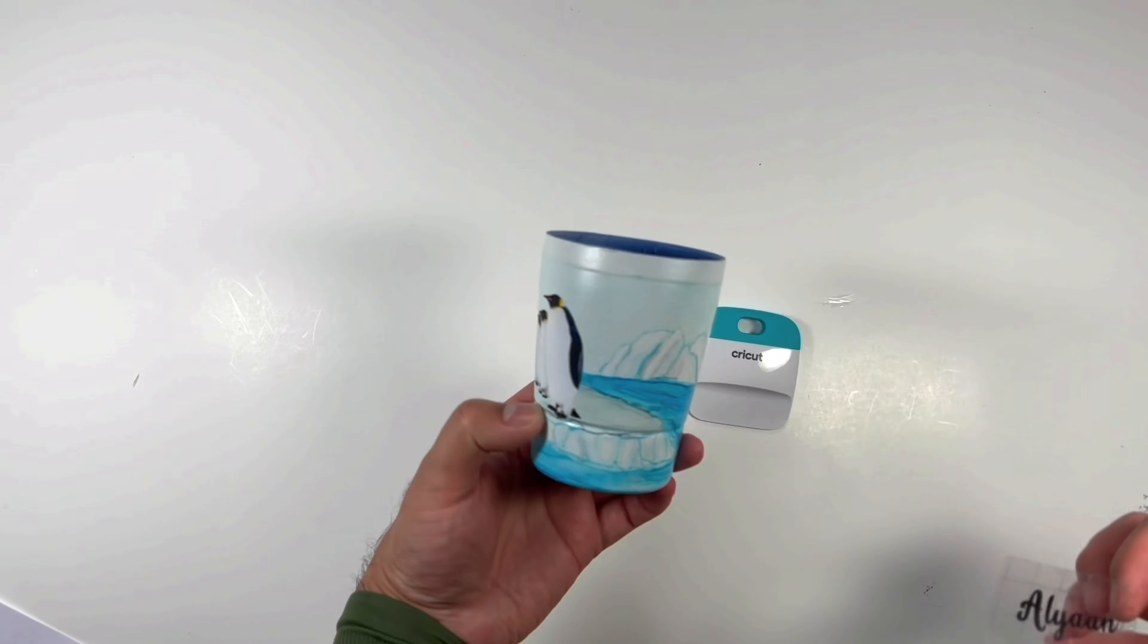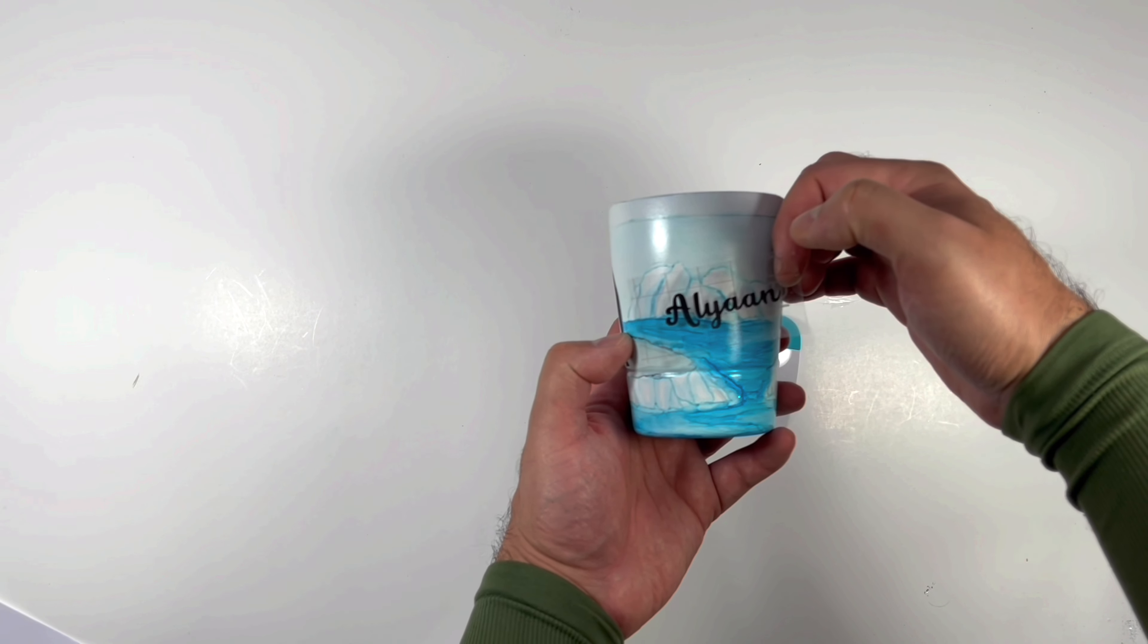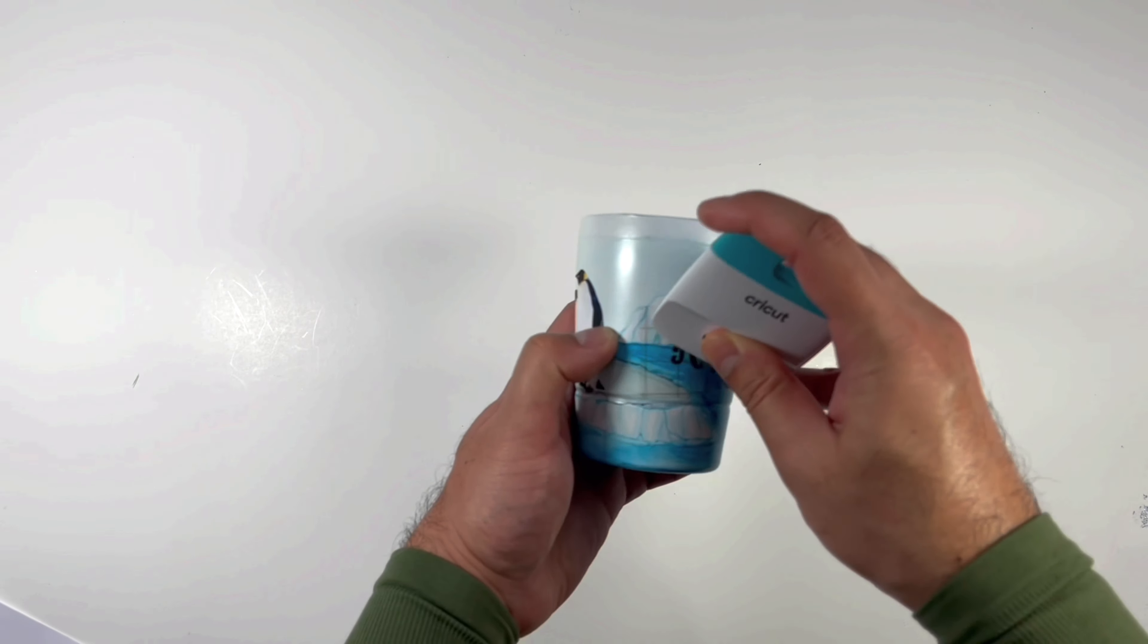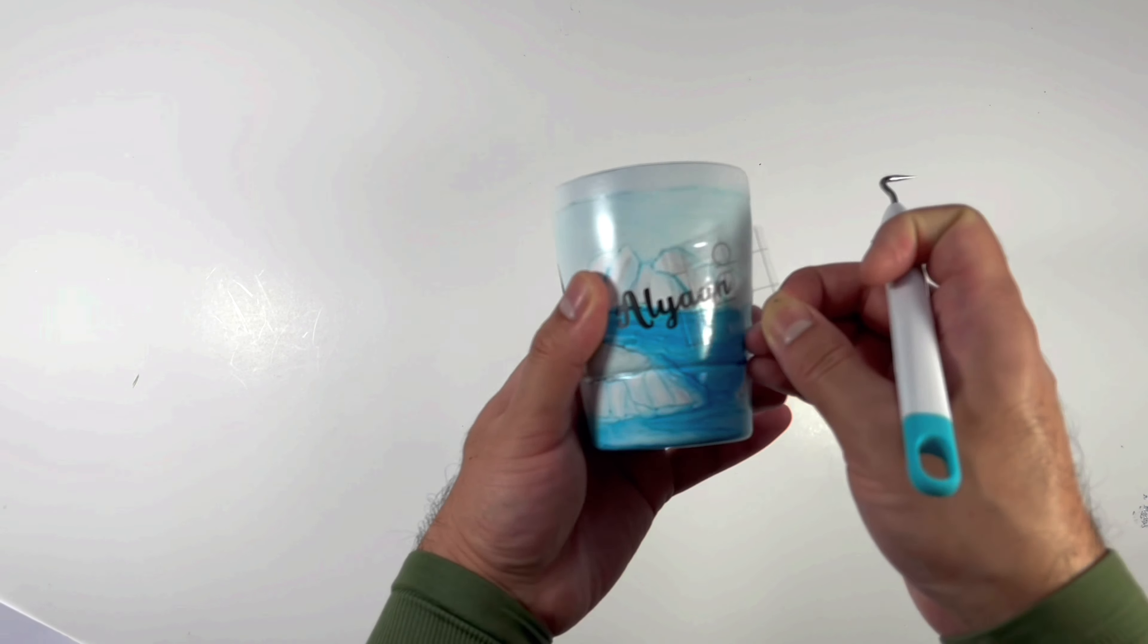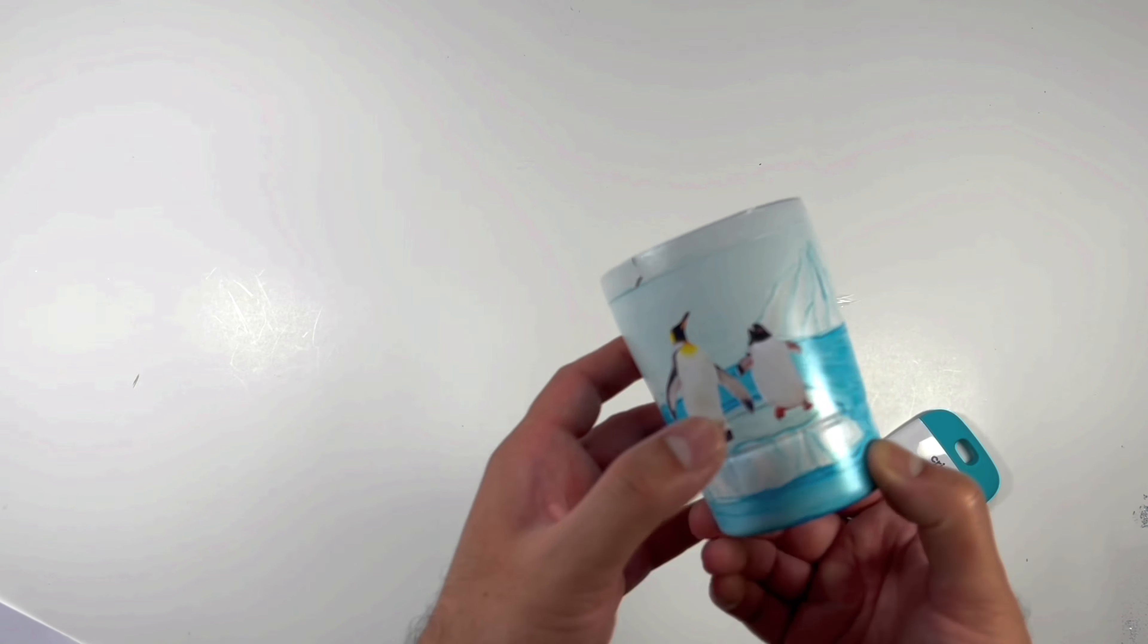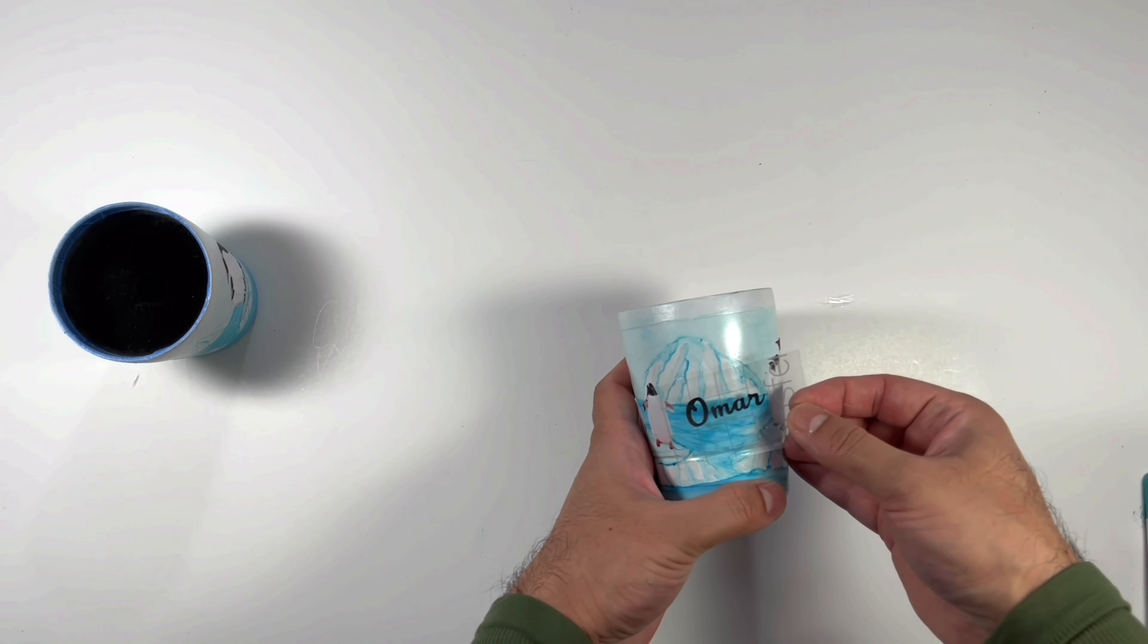This is the name of the little boy I made tumbler for. I made the name using a black colored vinyl in Cricut. Stick the name using a transfer tape and peel it off. And this is the other tumbler.